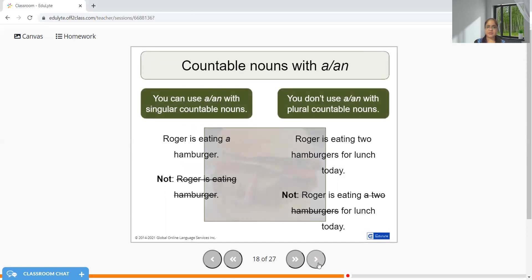Let me give you some sentences. Roger is eating a hamburger. Hamburgers is wrong. Roger is eating two hamburgers for lunch today. Two hamburgers is right because in the previous sentence I had A. As you remember, A is the article where we are referring to one particular object or one particular person.